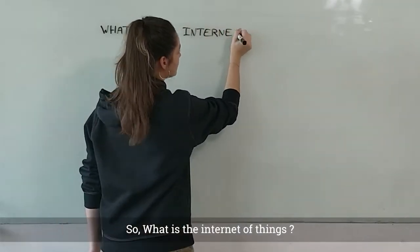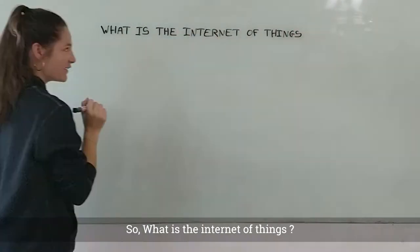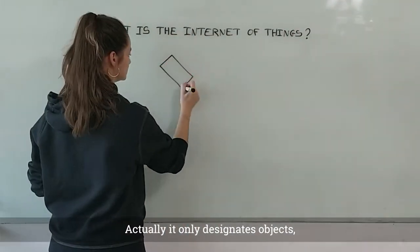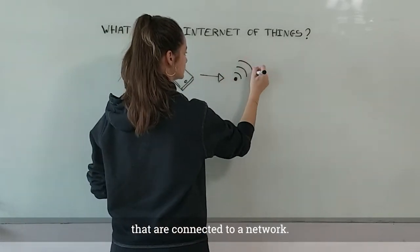So what is the Internet of Things? Actually, it only designates objects that are connected to a network.